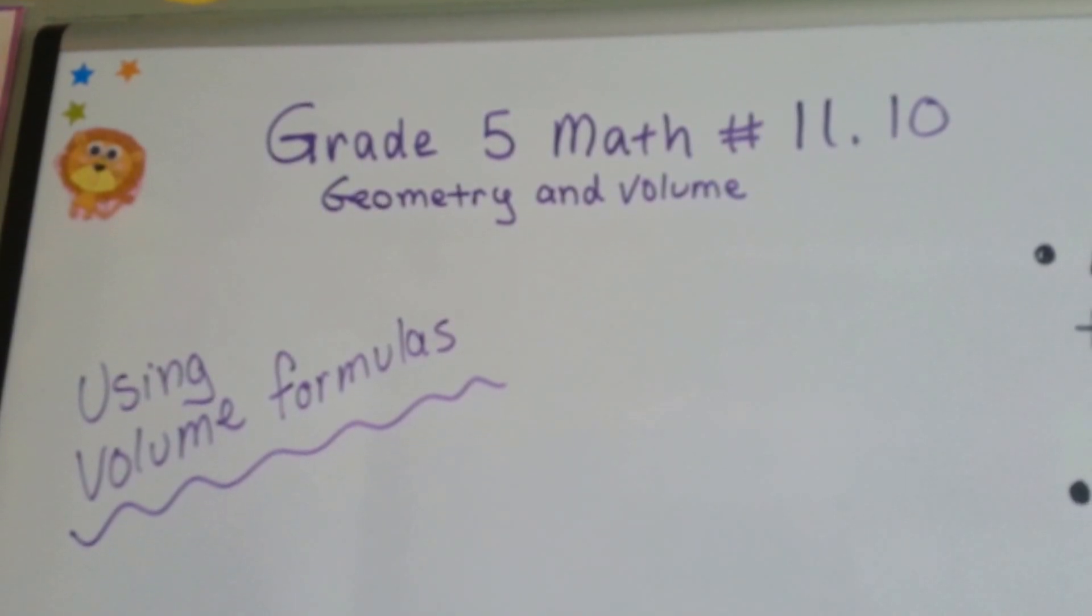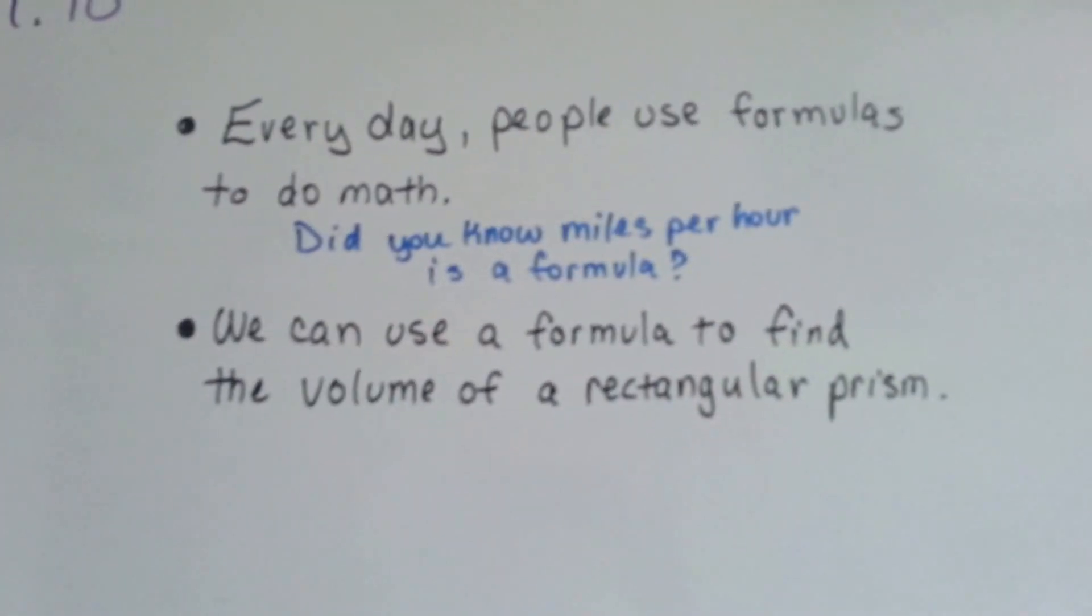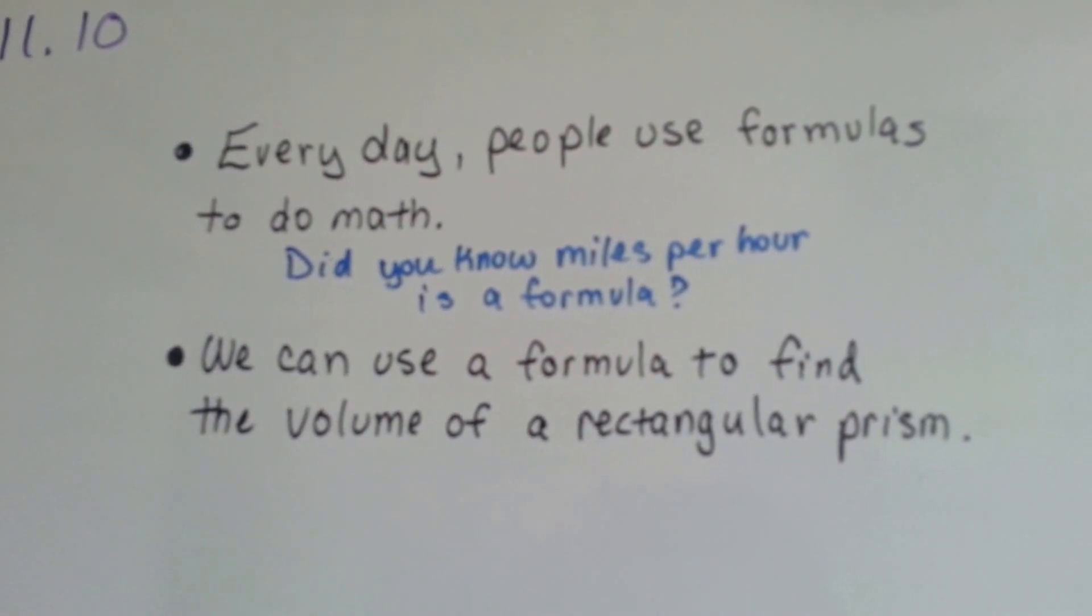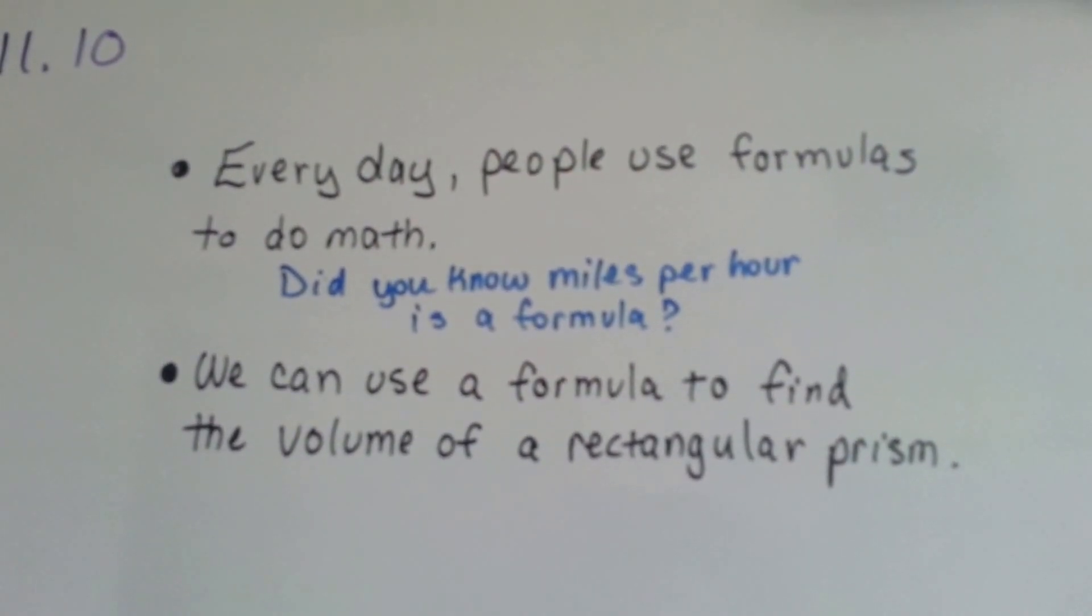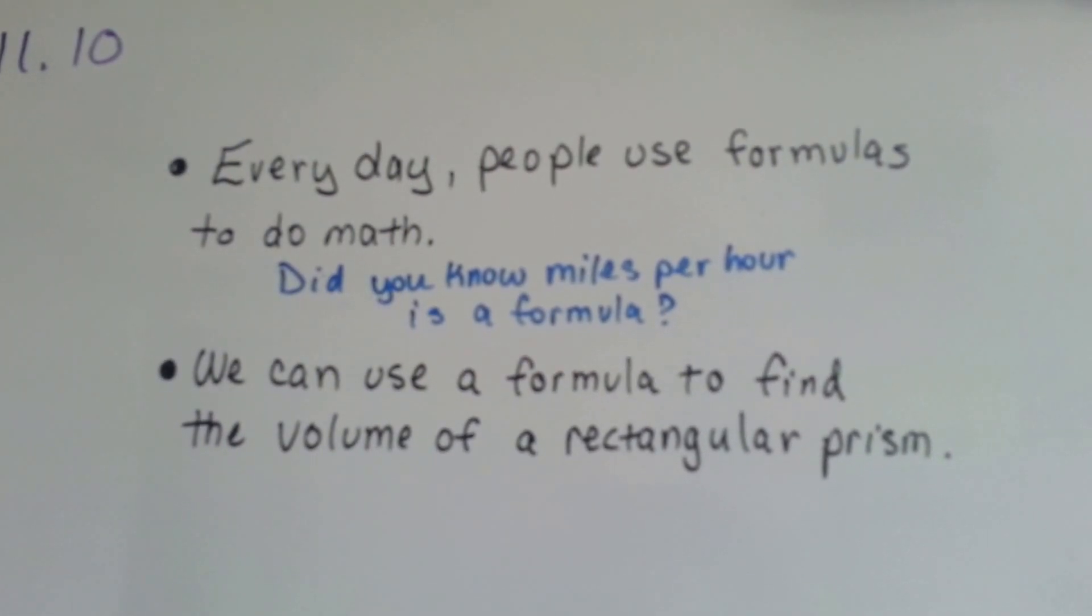Grade 5 math number 11.10: using volume formulas. Every day people use formulas to do math. Did you know that miles per hour is a formula? People say miles per hour every day. It's how many miles you go in an hour. It's a formula. We can use a formula to find the volume of a rectangular prism.